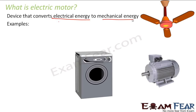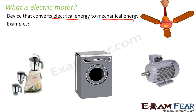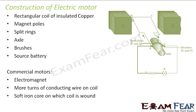Similarly, look at the fans in your home. You switch it on and it starts moving, so there also electrical energy is converted to mechanical energy. It is because of the motion of the blades of the fan that you get air. Similarly your mixer grinder — you switch it on and it starts moving. So all these devices have an electric motor inside which helps to convert electrical energy into mechanical energy. Now we will study how does an electric motor function.